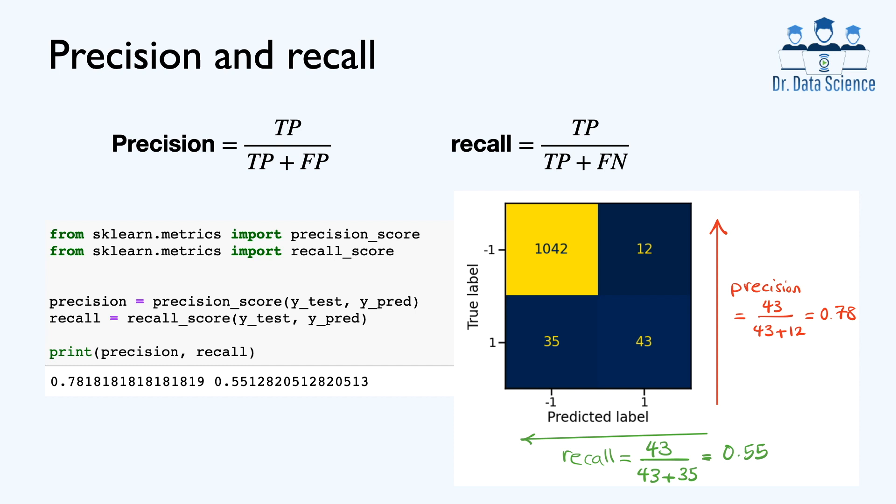And recall is defined as the ratio of true positive to true positive plus false negative. So here we can visually see how to find precision and recall. In order to find precision, we are looking for this vertical line, and you can see that here true positive is 43, and we divide this by 43 plus 12. So 12 here is false negative, and this gives us 0.78.